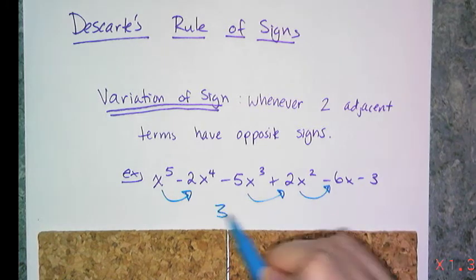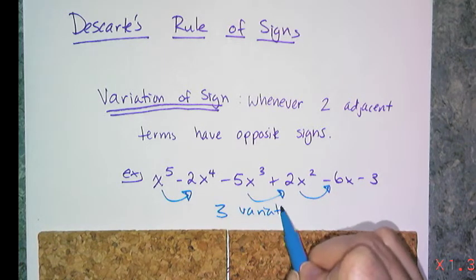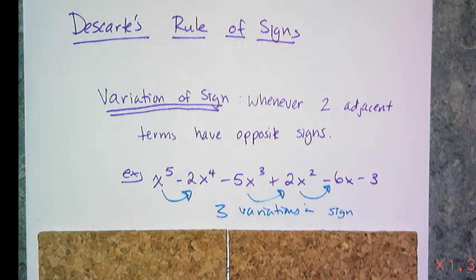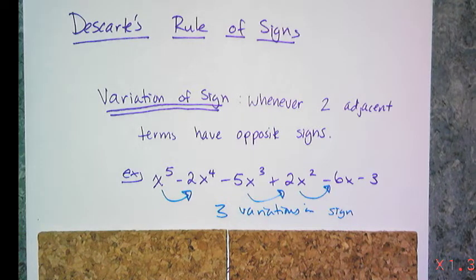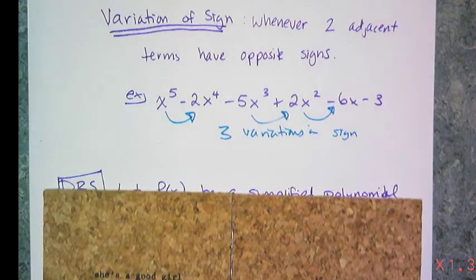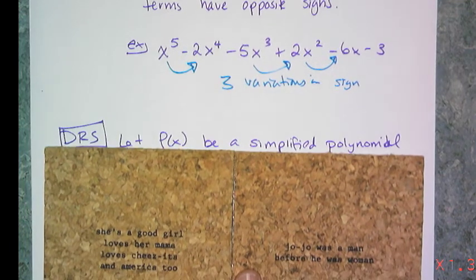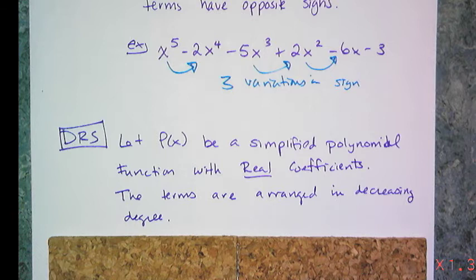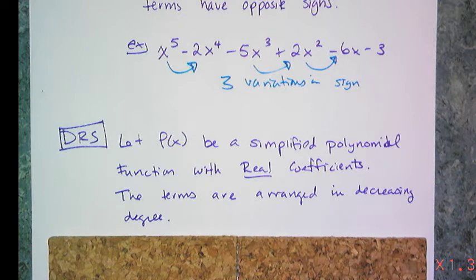What Descartes noticed was a pattern in the number and type of roots dependent on the variations in sign, which is a really cool thing back in the day, but not so useful for us right now. Here's what Descartes' rule of signs actually says: let p(x) be a simplified polynomial function with real coefficients, with terms arranged in decreasing degree.